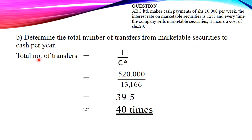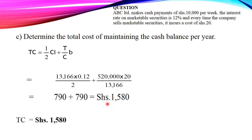Part B requires us to determine the total number of transfers from marketable securities to cash per year. To get this, we divide the total cash requirements by the optimal cash balance: 520,000 divided by 13,166, which gives approximately 40 times per year.